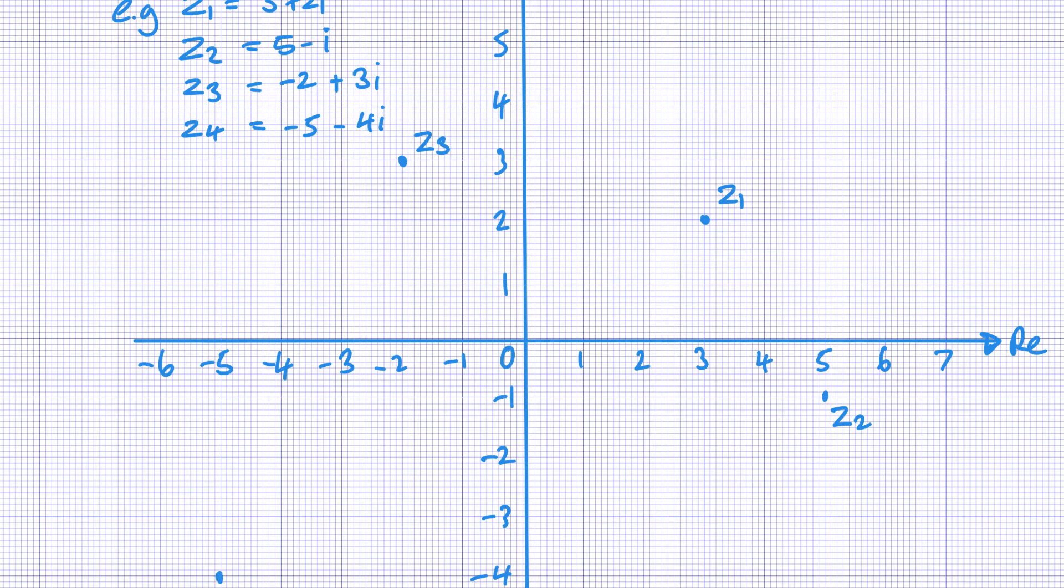So those are plotting my coordinates for my complex numbers. Now we also often look at them in terms of a vector which then goes from the origin. So joining at my first one with my origin, that would then be the vector z1, the complex number. The vectors are quite important when we start looking at the angles.